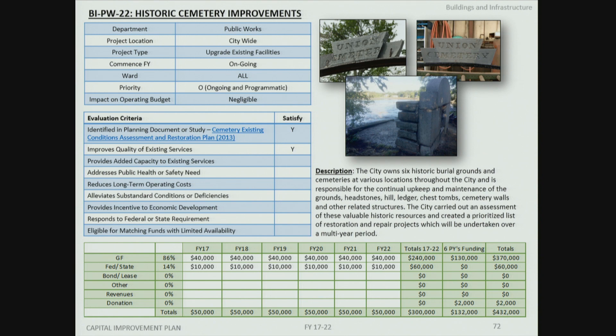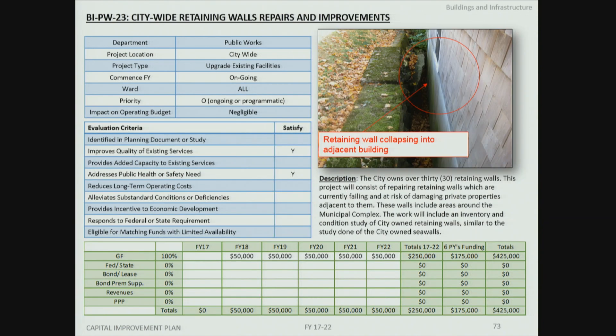The historic cemeteries project provides additional funding for improvements to the city's six historic cemeteries and burying grounds. Last year's increased funding completed the Union Cemetery front enclosure fence on Maplewood Avenue and the reconfiguration of the receiving tomb at Union Cemetery. Additional upgrades identified in a 2013 assessment are planned with the continued funding.